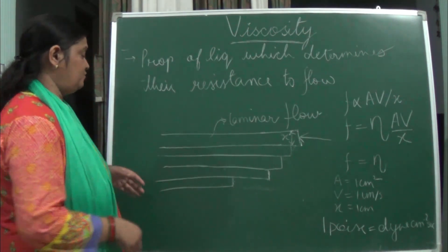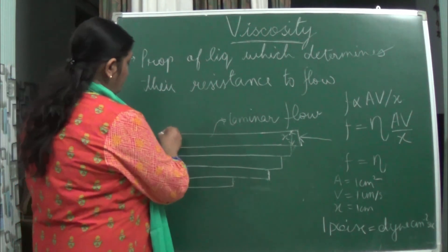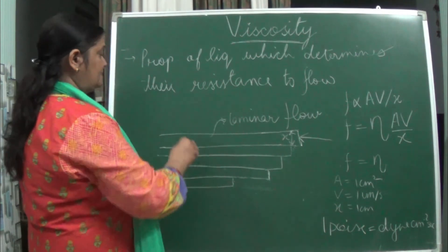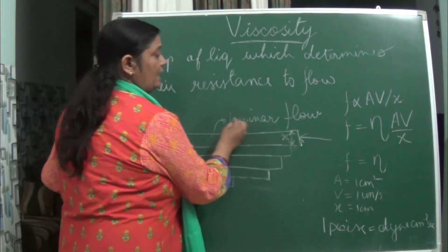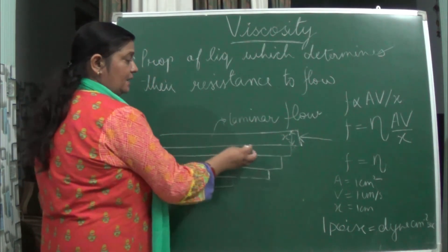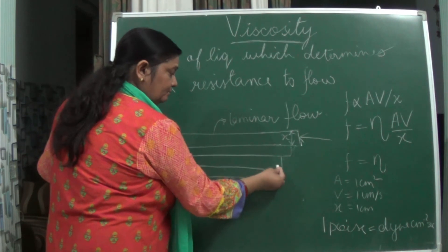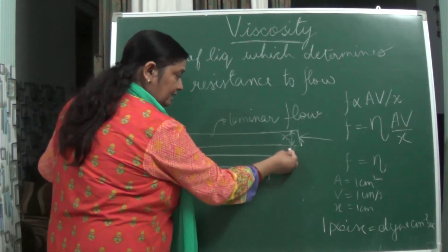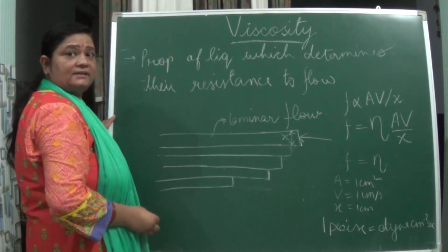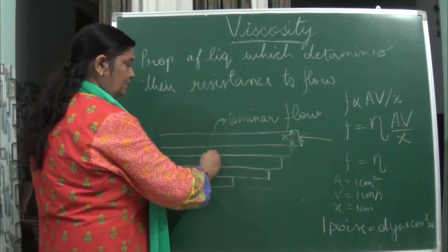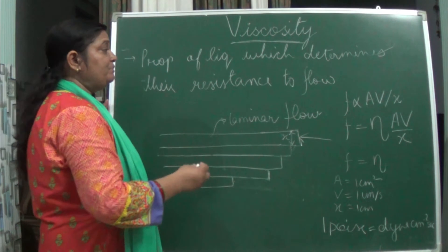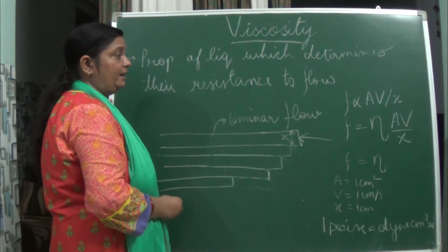What happens is the first layer of the liquid is flowing in a straight manner — this is known as laminar flow. The layers of the liquid which are below show a decrease in the flow rate, and this type of flow is known as laminar flow.